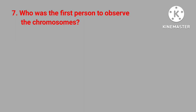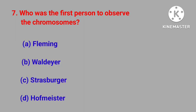Question number seven: who was the first person to observe the chromosomes? Fleming, Welder, Strasburger, Hofmeister. Correct answer is Hofmeister.